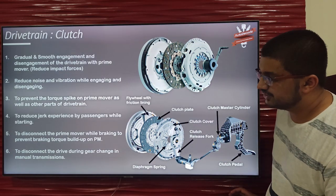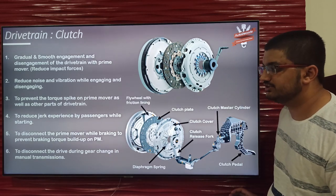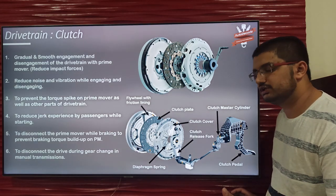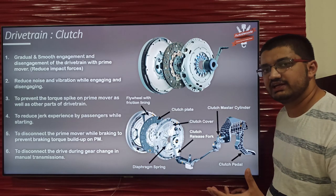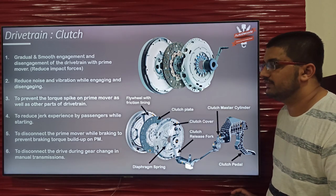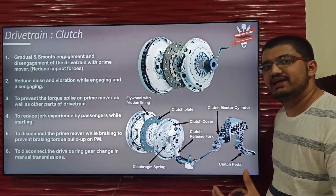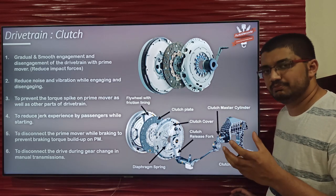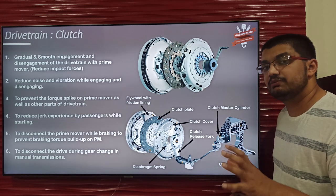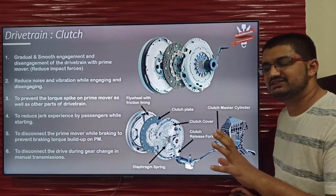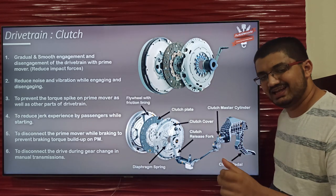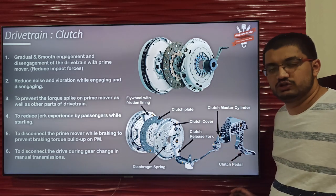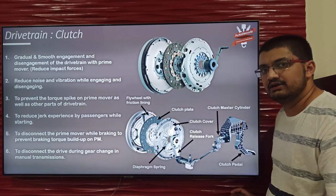The last function is to disconnect the drive during gear change in manual transmissions. The synchro cone assembly is a very delicate assembly. If we change gears while the prime mover is driving, there is a high torque built up on the synchro cone assembly which might damage these delicate components. Hence we disengage the drive from the prime mover so there is no torque buildup — the torque due to inertia alone is very much less.